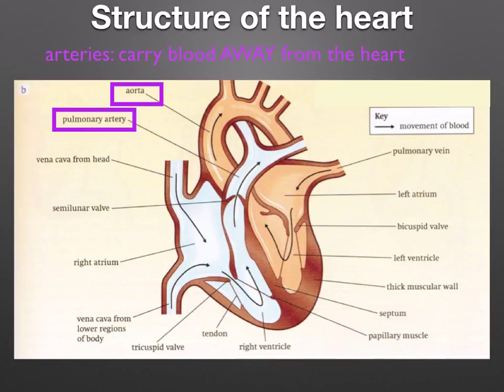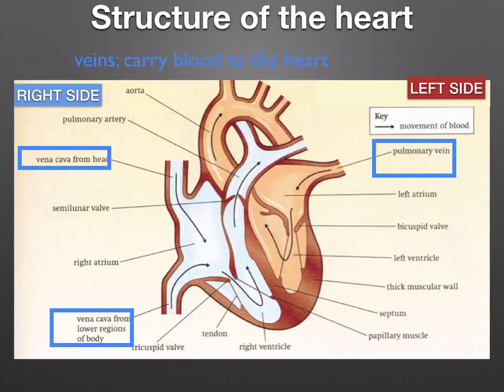Arteries carry blood away from the heart. Here you can see the two arteries — the aorta and the pulmonary artery — leaving the heart. To identify the aorta, it kind of looks like the letter A, forming a loop. Veins carry blood to the heart. On the left side you have the pulmonary vein, and on the right side you have the superior and inferior vena cava. The superior vena cava is at the top and brings blood from the head; the inferior vena cava brings blood from the lower body regions.